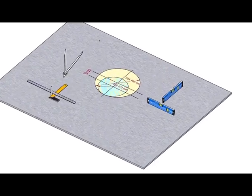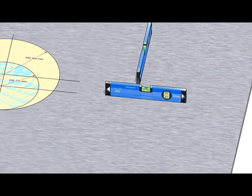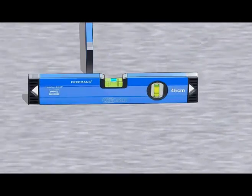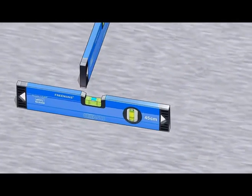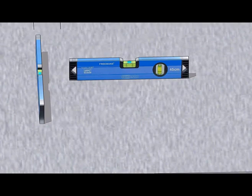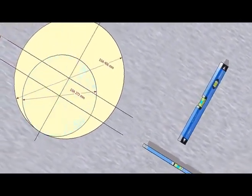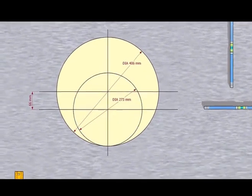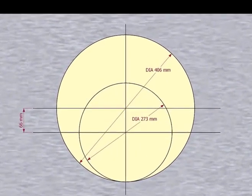Let us mark the center line. Check the levelness of the platform. Please remember that our reducer size is 16 inch by 10 inch. The large side OD is 406 millimeters, the small side OD is 273 millimeters, and the eccentricity is 66 millimeters.